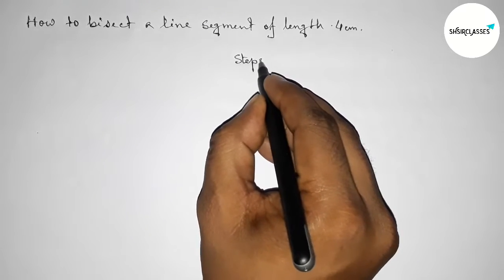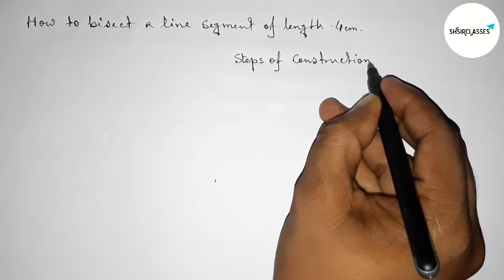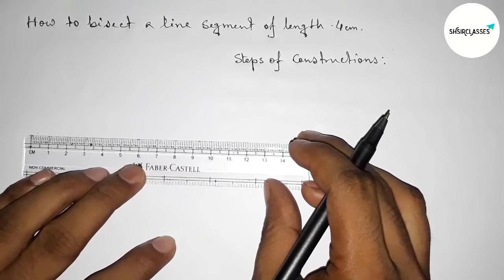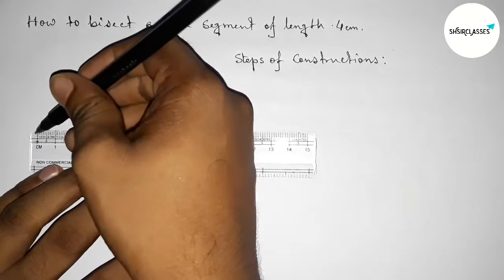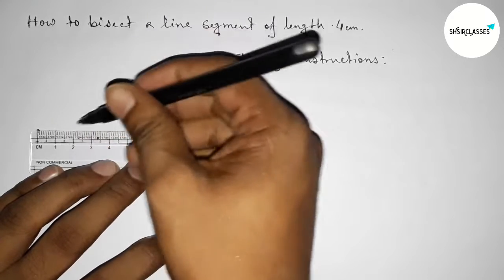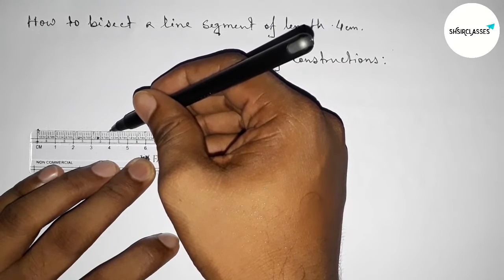to write down here the steps of construction. Okay, so first we have to draw here a line of length 4 centimeter by using scale. So here this is starting 0 and this is 1, 2, 3, and this is